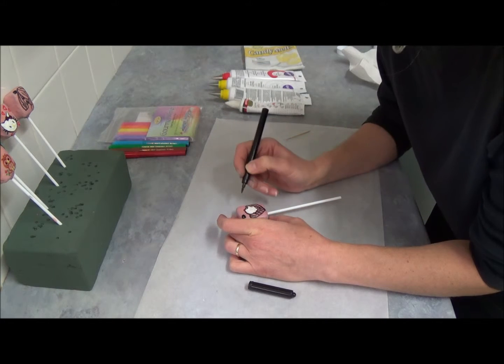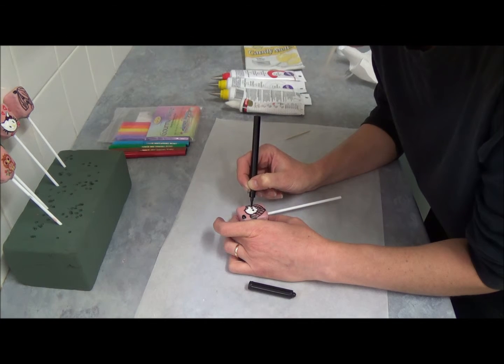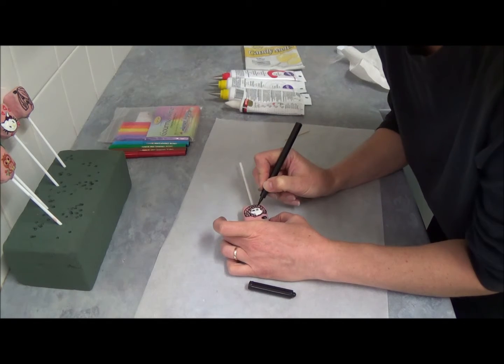Now what we have to do we have to put little tiny dots for the eyes. Don't place too much because we are using food edible pen.